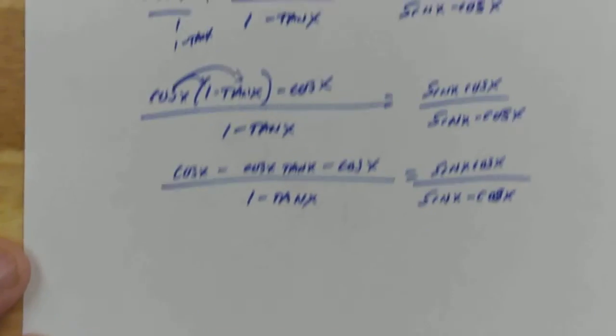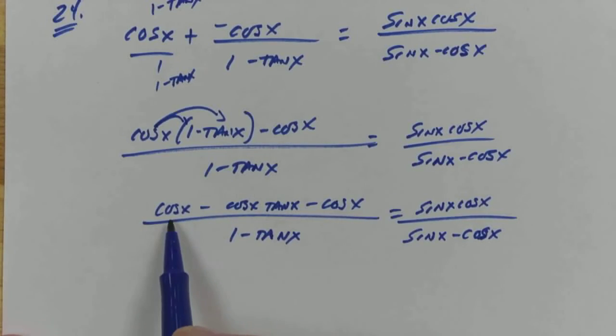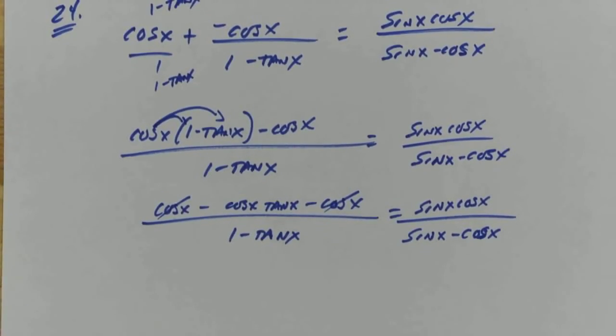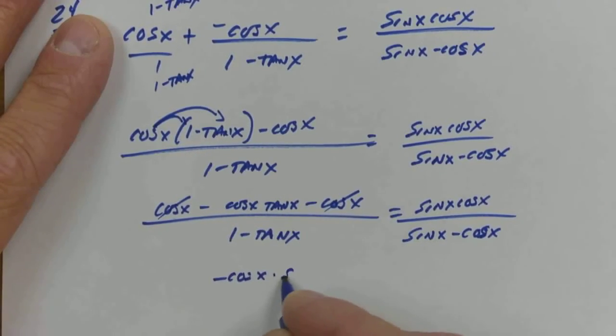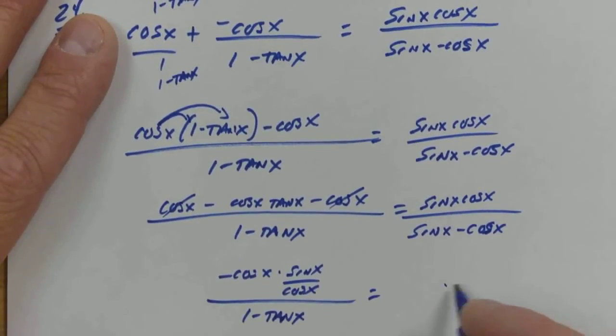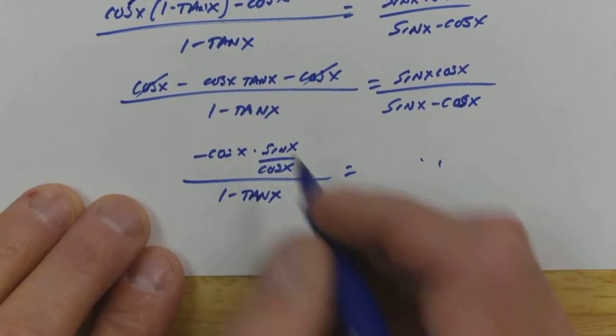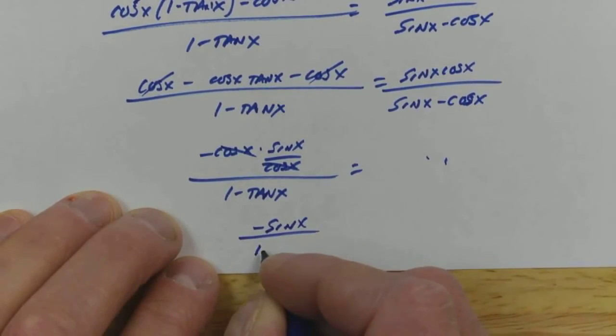Hopefully you can see why I thought multiplying that out might be helpful. Because what do you notice happens on the top of the left side? These cancel each other. So we've got a little bit of a simplification. So now what I'm left with, and actually let's see, I can even simplify this. I've got negative cosine x times sine x over cosine x all over 1 minus tangent x. My cosines will cancel. I'm just trying to strip it down to get it as simple as I can. Then maybe I can see a link of some sort. Negative sine x over 1 minus tangent x.